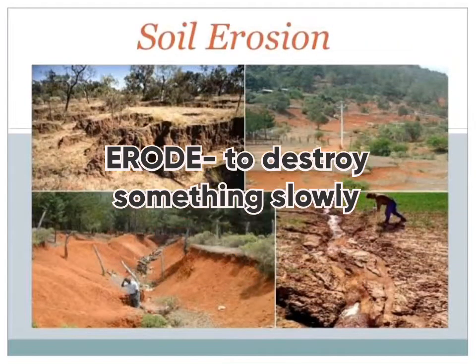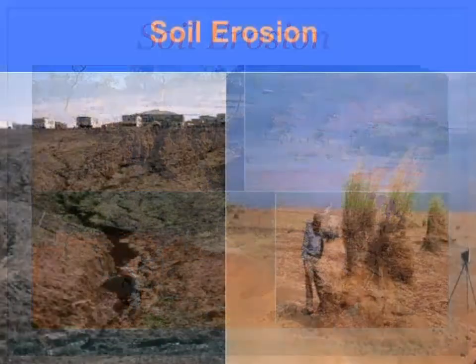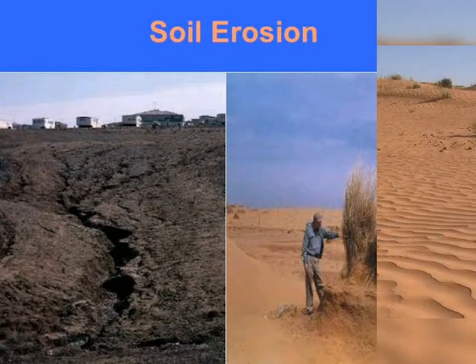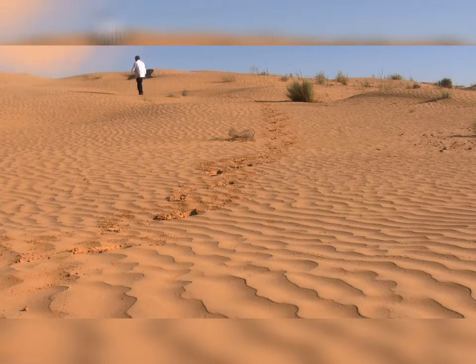Erosion means to erode. Erode means to destroy something, to destroy badly, slowly and slowly. So here the discussion is about soil erosion, meaning to destroy the soil either by wind or by water. The most common agent of soil erosion is wind. Wind blows away the topsoil from places where there is no vegetation, where there is less plantation, less vegetation.